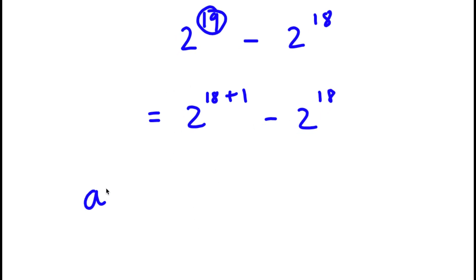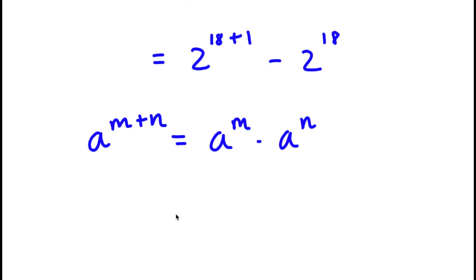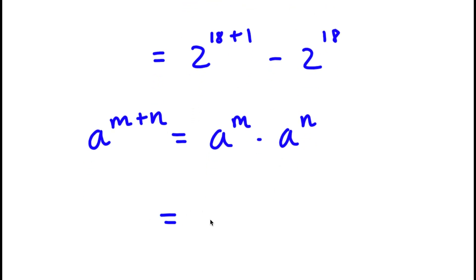Now, if I have something in the form a to the power of m plus n, this is simply equal to a to the power of m times a to the power of n. So in this case, 2 to the power of 18 plus 1, I'm going to write that as 2 to the power of 18 times 2 to the power of 1. Now I have this minus 2 to the power of 18.